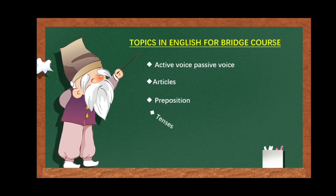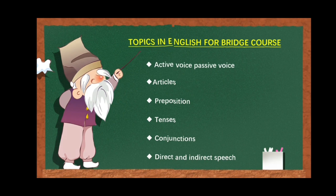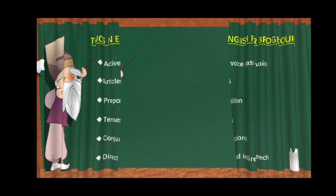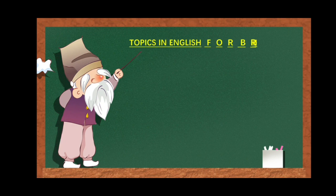And prepositions — the three levels of prepositions. The tenses — both the 12 tenses we are going to see. And then conjunctions — the types of conjunctions and where we have to use the proper conjunctions. The direct speech and indirect speech — how to change direct sentences into indirect, and how to change indirect sentences into direct.